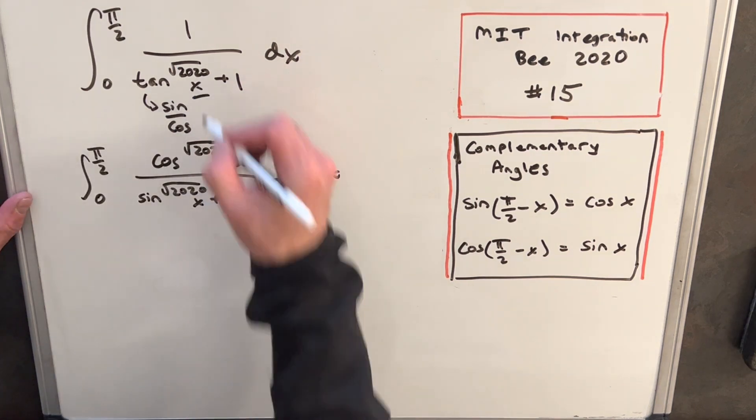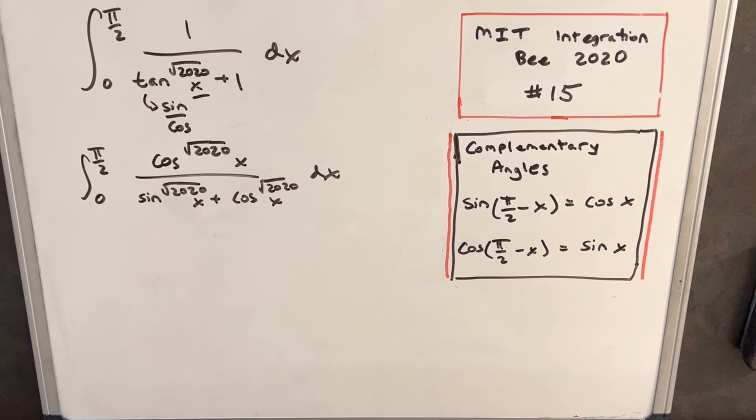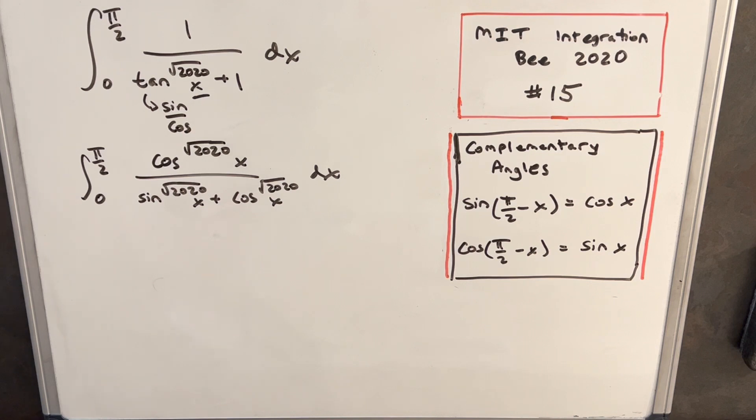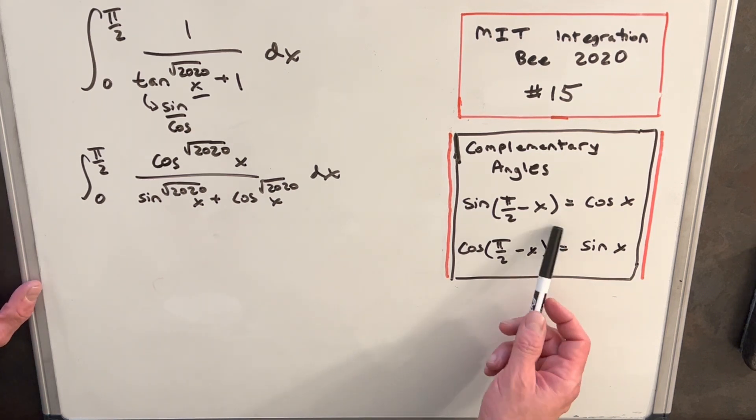Sorry I forgot the x in the initial problem. So now that I've done that we have this entirely in terms of sine and cosine. And then you might notice this looks like the King's Principle or the King's Rule or the King's Property. That's going to allow us to use substitution and make use of the complementary angle formulas that we have over here to the right.